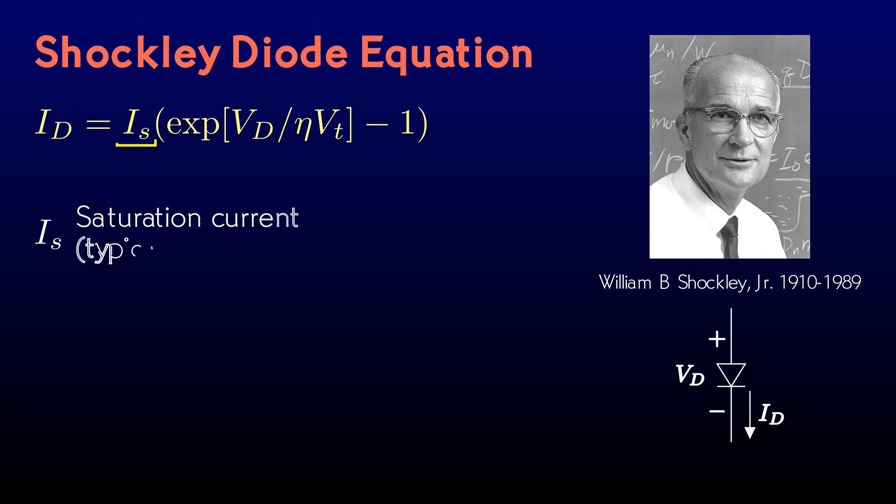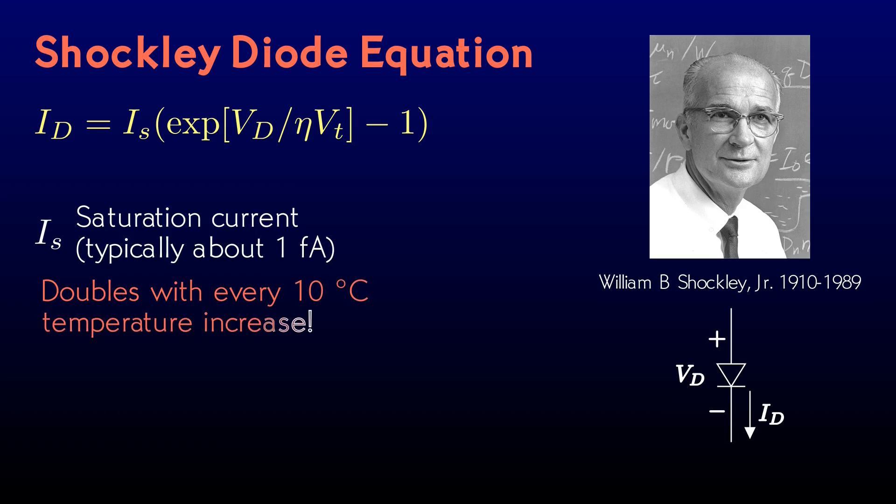I sub S is a quantity called the saturation current. You will never find it in a device data sheet, because it's so highly variable. In particular, it's horribly temperature-dependent. It roughly doubles with every 10 degrees Celsius of temperature increase. We'll see later on how we can arrange things so that we don't need to know its value.